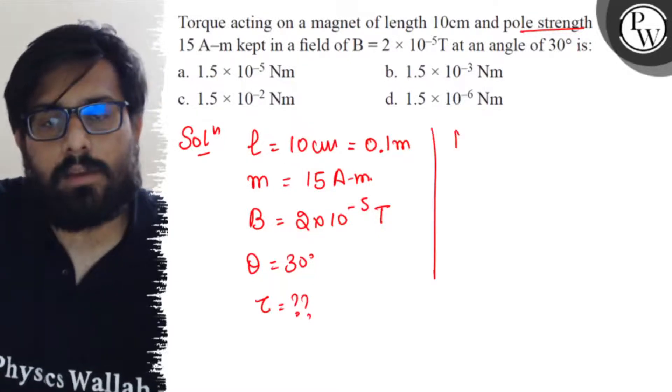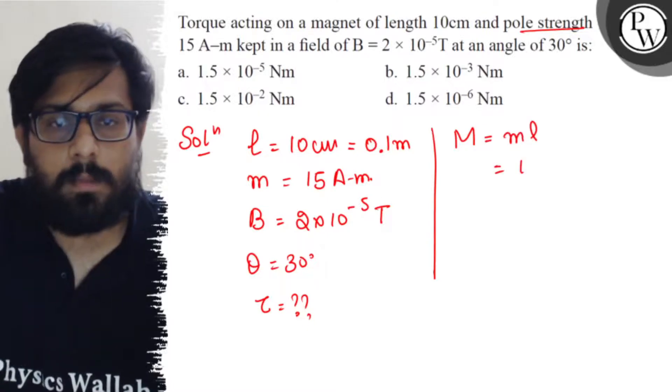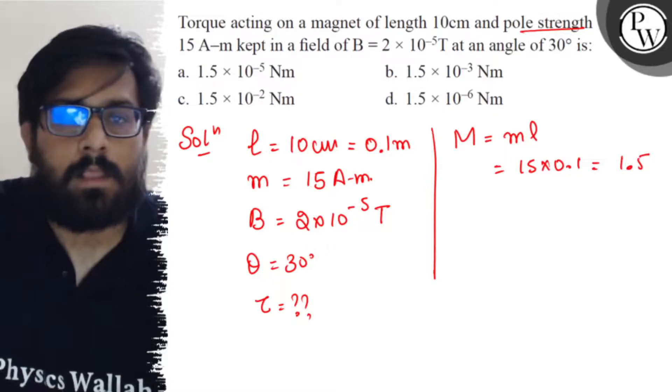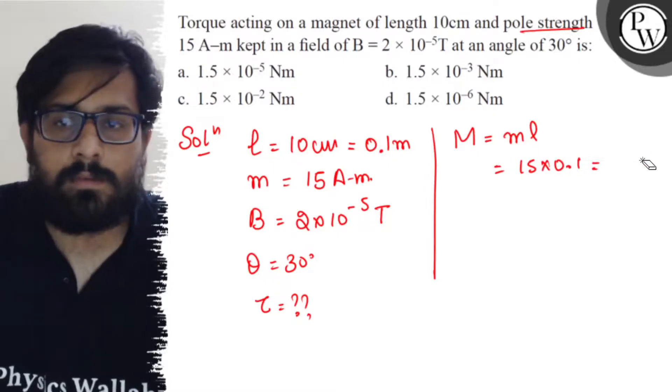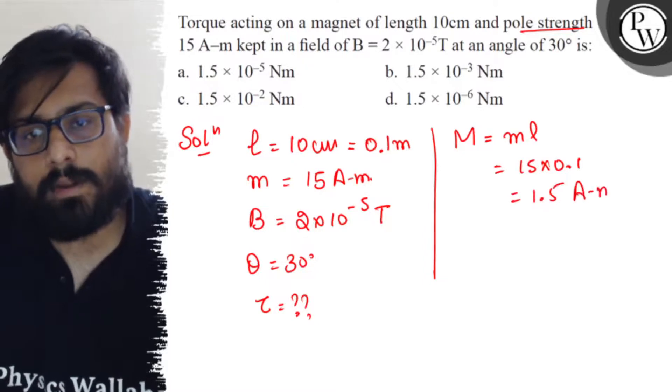Now from here you can calculate the value of magnetic moment as m into l. It comes out to be 15 into 0.1 or 1.5 ampere meter square. So this comes out to be 1.5 ampere meter square.